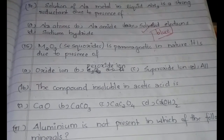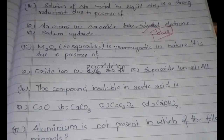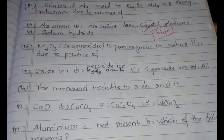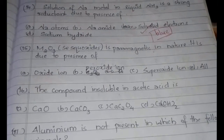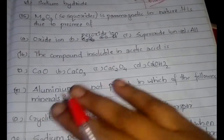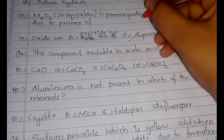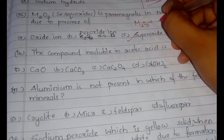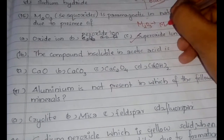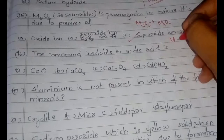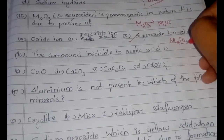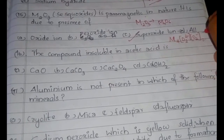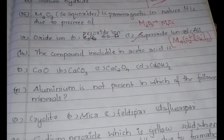The 15th question: sesquioxides are paramagnetic in nature because of — the answer is option C. The oxide M₂O₃ actually exists in the dimerized state as M₄O₆, which can be written as [M⁺]₄[O₂²⁻]₂[O₂⁻]₂. Superoxide (O₂⁻) is the reason for the paramagnetic nature.